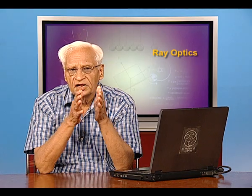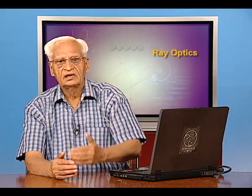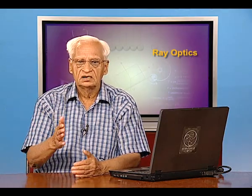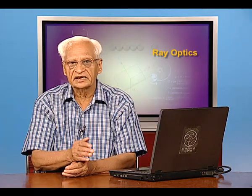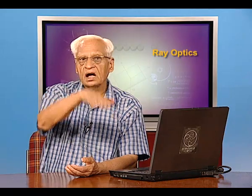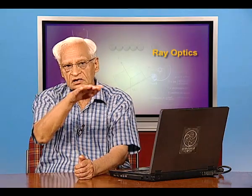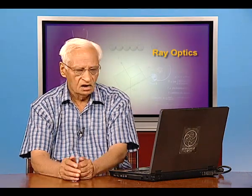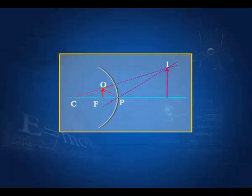You remember the convention? We are using the Cartesian convention. Light comes from the left. All distances measured to the left are positive; all distances measured to the right are negative. All distances measured upward from the axis are positive; all distances measured downward from the axis of the mirror are negative. This is the formation of image when the distance of the object from the mirror is less than the focal length.